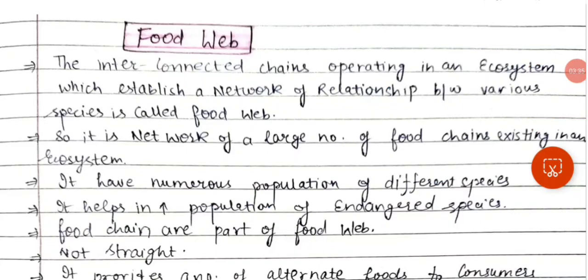Now food web is when many food chains are interconnected. The interconnected chains operating in an ecosystem which establish a network of relationships between various species is called food web. So it is a network of large number of food chains.